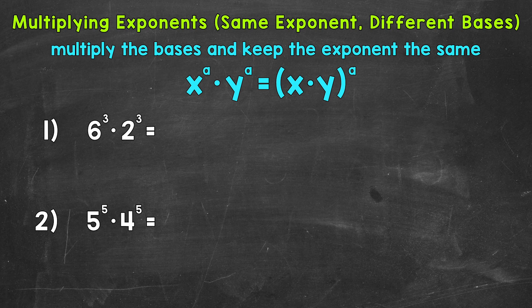Starting with number 1, where we have 6 cubed times 2 cubed. So we need to multiply the bases and then keep the exponent the same. So you'll notice that we have the same exponent of 3, but our bases differ. We have a 6 and a 2. So let's multiply those bases. 6 times 2 gives us 12.